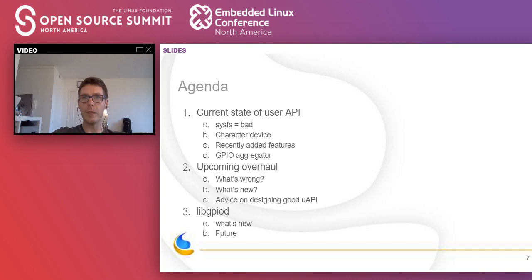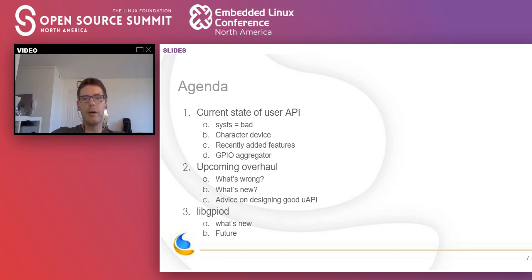I'll be talking about what to keep in mind when designing user-facing interfaces in the Linux kernel, in the context of Linux GPIOs. The agenda for today is as follows: First, I'll discuss the current state of the GPIO user API. I'll talk about the deprecated SysFS interface, briefly describe the character device basics, then go to the recently added new features including the GPIO aggregator. Next, we'll talk about the work happening right now on the new version of the GPIO API, covering what's wrong in the current ABI, new features being worked on, and what to pay attention to when designing user-facing interfaces. Lastly, I'll talk about the user space part of the GPIO interface.